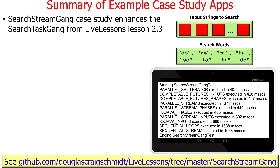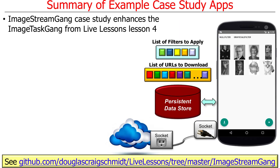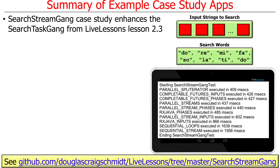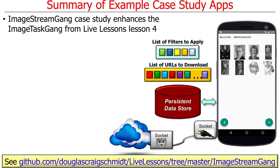We'll look at a couple of examples. First, we'll take the search stream gang and upgrade it to work with parallel streams instead of sequential streams, resulting in a big performance boost. We'll also look at the image stream gang case study, which is similar to your assignment 2 download program and shows off many interesting features.